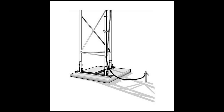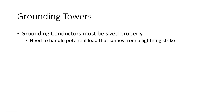Extra care should be taken when grounding any type of tower, mast, or monopole because of the danger that they can present, especially in regards to lightning strikes. It is important to ensure that when grounding any type of tower structure, the grounding electrode conductors be sized properly so that they can handle any potential load that the tower may encounter.